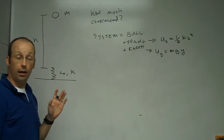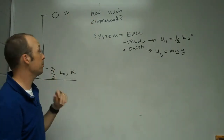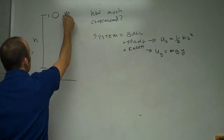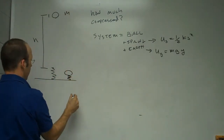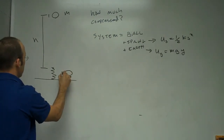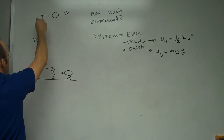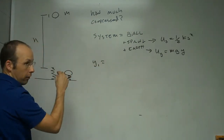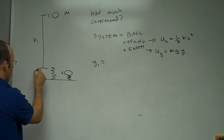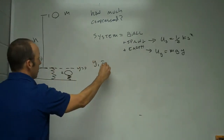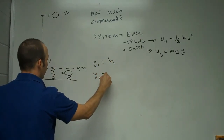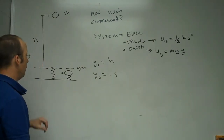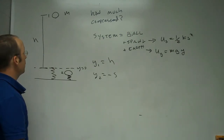The next thing I need to do is pick two positions in space to apply the work-energy principle. I'll have it start up here, and then end down here with the compressed spring and the ball at the bottom. I'll call the top of the spring y equals zero. So y1 is going to be h, and y2 is going to be negative s, where s is how much the spring is compressed.